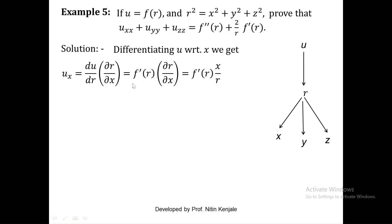Since u is defined as f of r, du/dr is given by f dash of r. As seen in my previous video, ∂r/∂x equals x by r. So we replace ∂r/∂x by x by r, and therefore ux equals f dash of r into x by r.